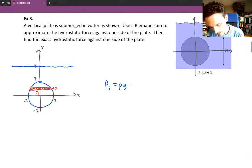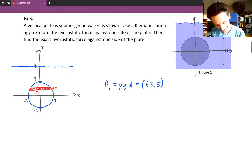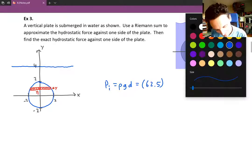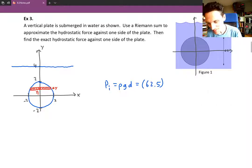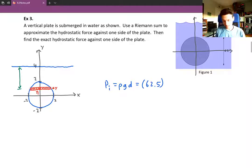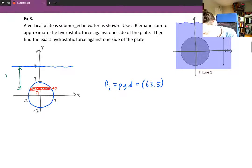The units here are in British units, feet. So we're going to write 62.5 is like our rho g. Let me actually write this rho g d. This is rho g d. And we have to get the depth d. That's going to be the distance from the strip all the way up to the top of the water.